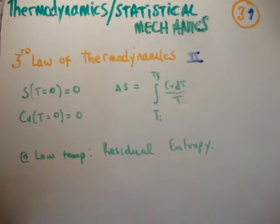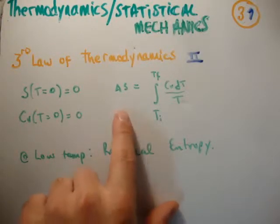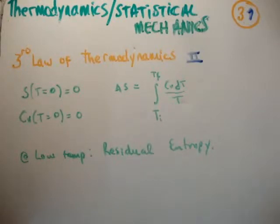Now, in the previous video, number 30, where I introduced the third law of thermodynamics, I said that at T equals 0 or 0 Kelvin, both the entropy and the heat capacity of constant volume are 0. And we got this expression here, that the change in entropy was equal to the integral from your initial temperature to your final temperature of C sub V dT over T.